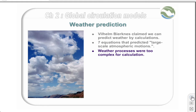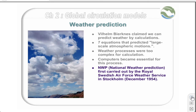The complexity of weather processes is such that even the crudest models were improbably calculation-intensive. It was not until simple computers were developed that National Weather Prediction, or NWP, was feasible. The first time National Weather Prediction was carried out was by the Royal Swedish Air Force Weather Service in Stockholm, launched in December 1954.